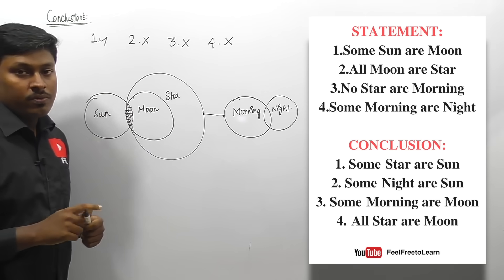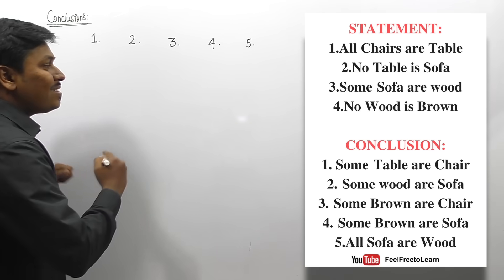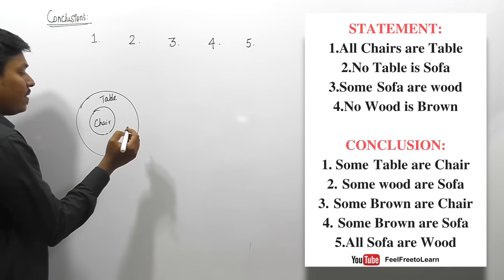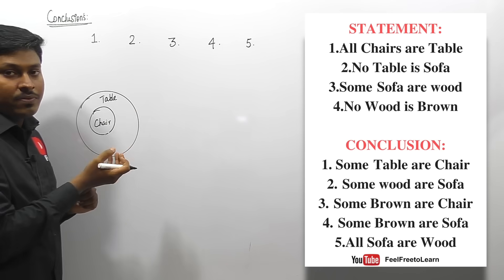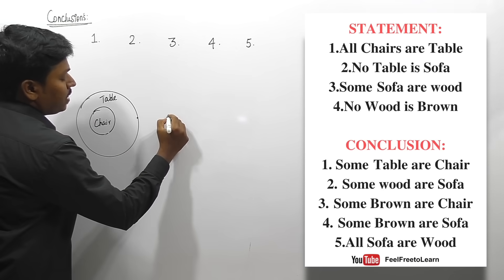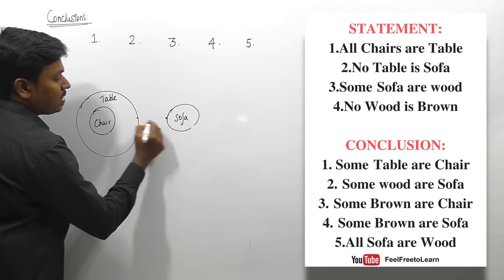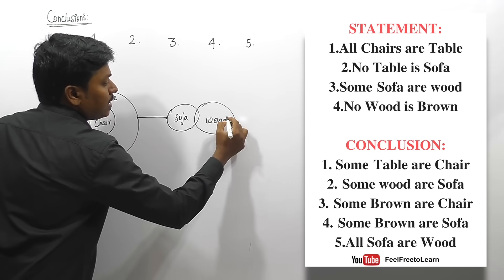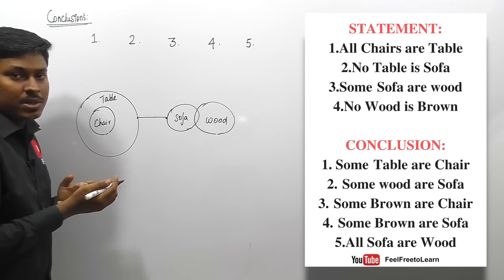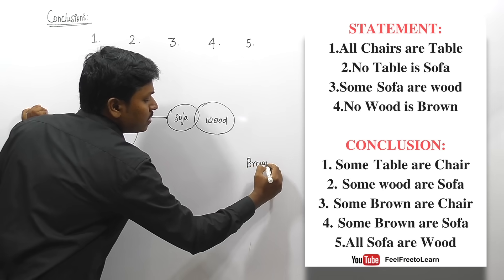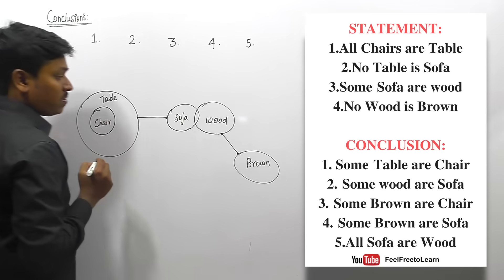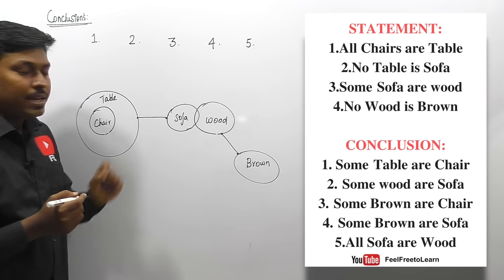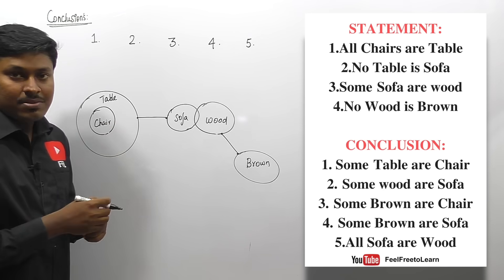Question number five — statements: 'All chairs are table', 'No table is sofa', 'Some sofa are wood', 'No wood is brown'. The line between table and sofa means no connection; the line between wood and brown means no connection. Draw the Venn diagram accordingly for all four statements.